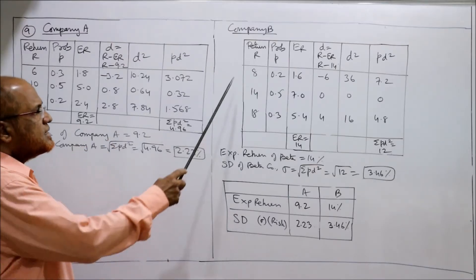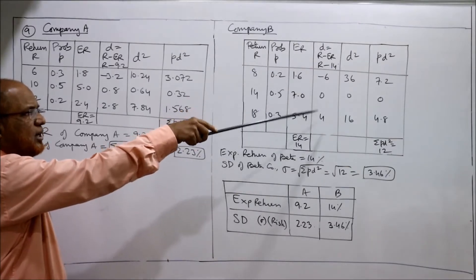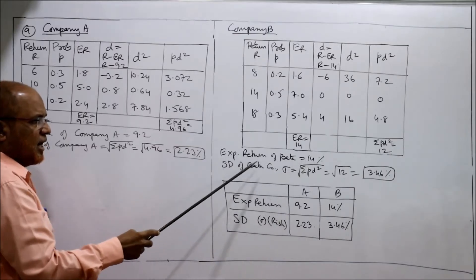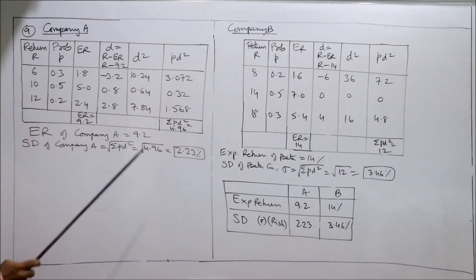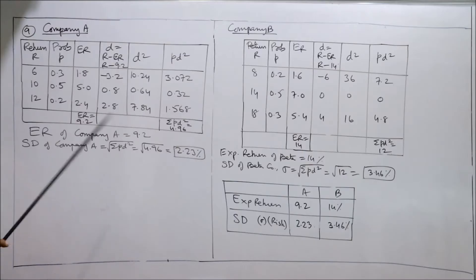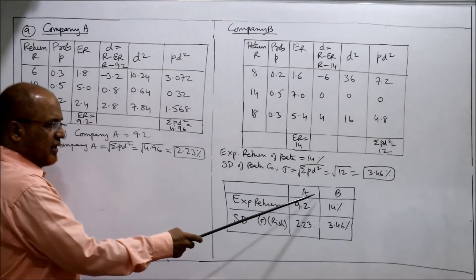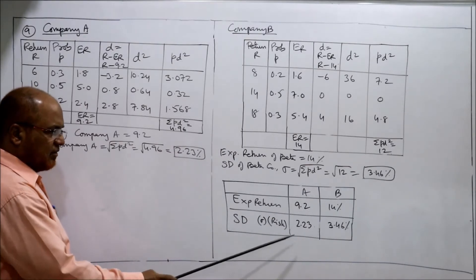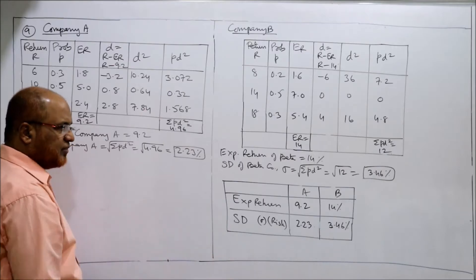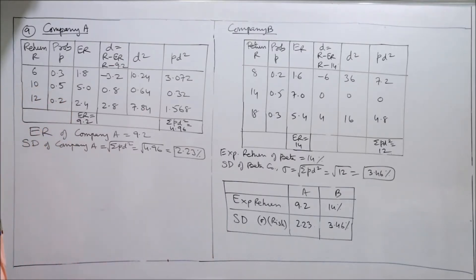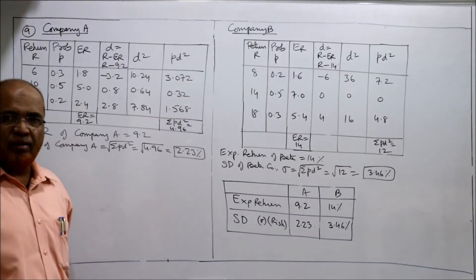Now we move to Company B. Using the same type of calculation — return, probability, expected return, deviation, D², PD² — the expected return for Company B is 14% and the standard deviation is 3.46.